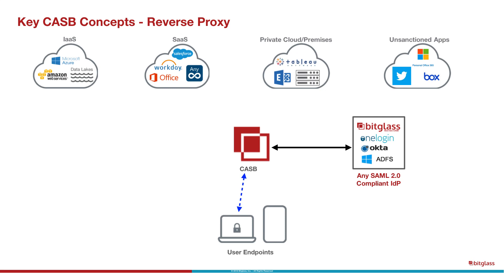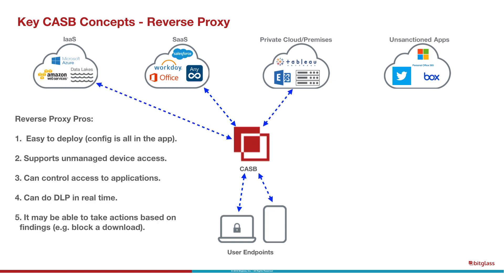In the case of Bitglass, Bitglass can be the identity provider, or it can partner with any SAML 2 compliant identity provider — OneLogin, Okta, Ping, ADFS, and others. Once the authentication process is complete, the session is initiated through the CASB between the cloud application and the endpoint. The huge advantage here is that the user didn't have to do anything different — they signed in just like normal, but the CASB was able to get into the path and perform all those real-time controls.